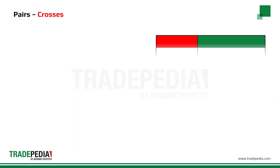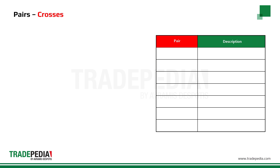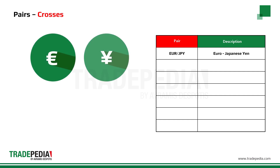Currency pairs that do not involve the US dollar are called crosses, because usually before trading these pairs, you have to trade first a pair which includes the US dollar. For example, if you have euros and want to buy yen, you must first exchange your euros to US dollars using the euro-US dollar exchange rate, and then convert the US dollars into Japanese yen using the US dollar-Japanese yen exchange rate. Or you cross out the US dollar from the equation and get directly the euro-Japanese yen rate — hence the name crosses.